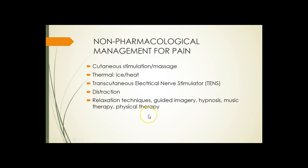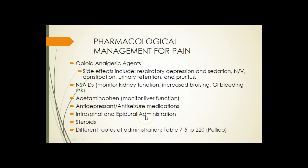Pharmacological options include opioids. Make sure you know the side effects: respiratory depression and sedation, nausea and vomiting, constipation, urinary retention, and pruritus, which is itching. Respiratory depression is serious — if it occurs, you would typically need to use a reversal agent like naloxone or Narcan.